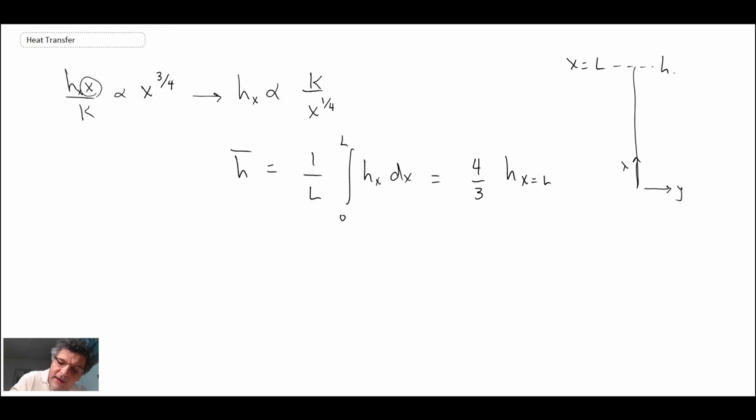We would evaluate h at x equals L, and then h bar, or the average value for the entire plate, is then just four-thirds h at x equals L, which would be the convective heat transfer coefficient at the end of the plate. This is in the case of an isothermal plate that we were looking at.